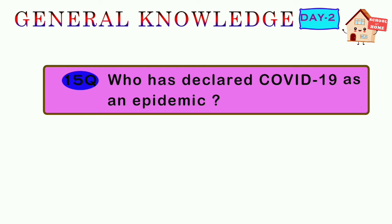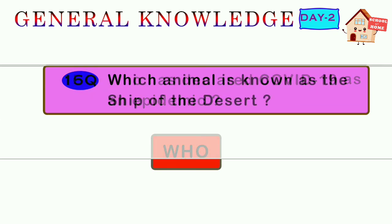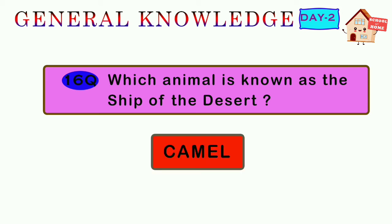Fifteenth question: who has declared COVID-19 as an epidemic? Answer: WHO — World Health Organization. Sixteenth question: which animal is known as the ship of the desert? Answer: camel.